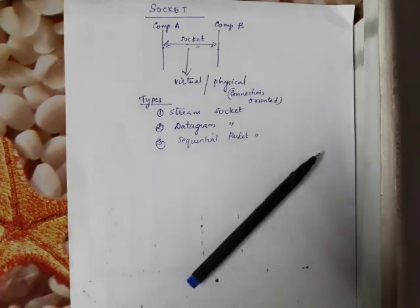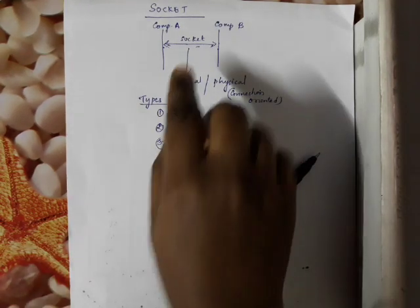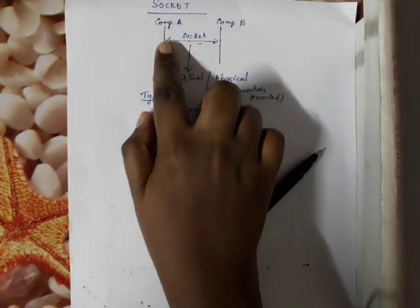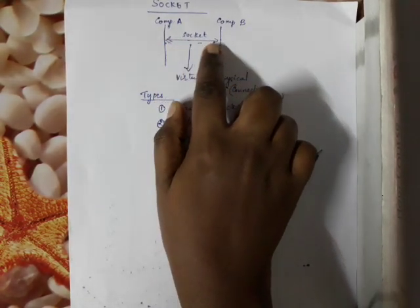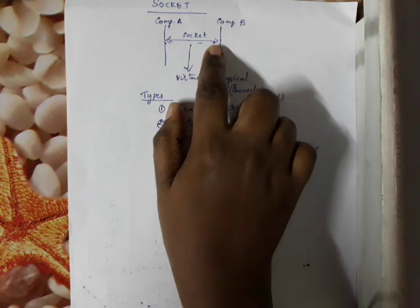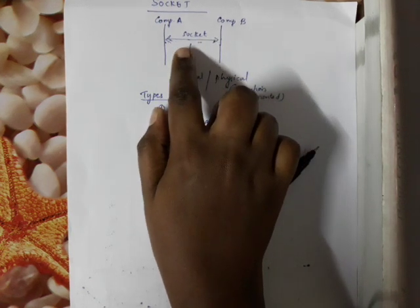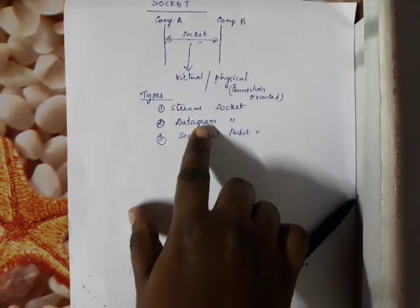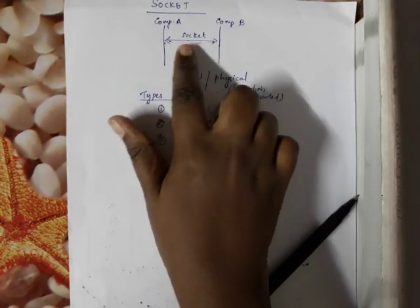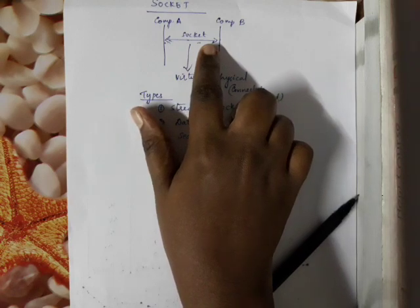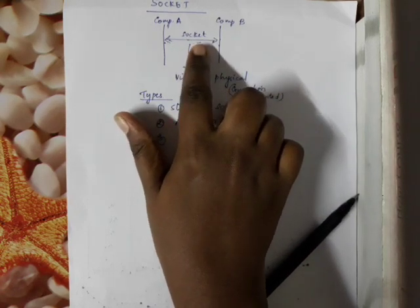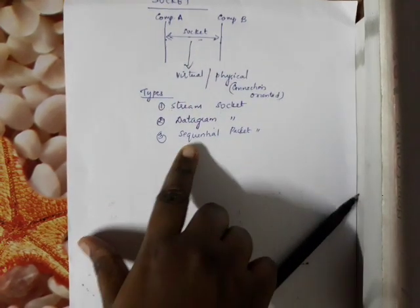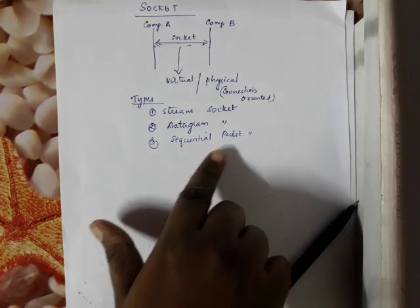The third type is Sequential Packet Socket. Sequential Packet Socket is bidirectional and uses sequence numbers. The first property is sequence number ordering. The second property is fixed-length data — the data packet size is fixed. It maintains two-way communication with fixed-length data.